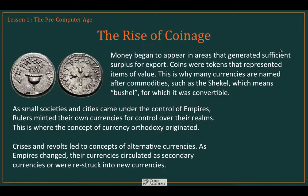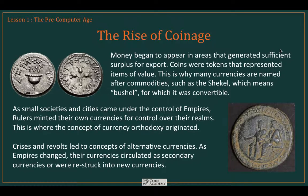Any time there's leadership and control, there are going to be crises, revolts, and people who want an alternative. This is when the first alternative currencies arose. As empires changed, their currencies continued to circulate because they were often made of valuable metals. They circulated as secondary currencies or were sometimes re-struck into new currencies. An old Roman coin demonstrates this — notice the depressed rim around the outside. This was created by taking a donut-shaped die, placing it over an existing coin and hammering it down to re-strike that coin and create an alternative currency. It's almost as though they were forking an existing physical currency.